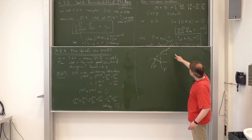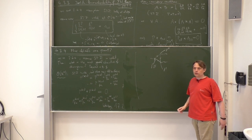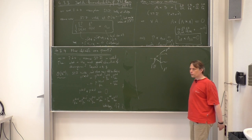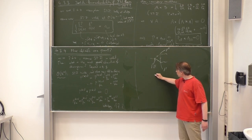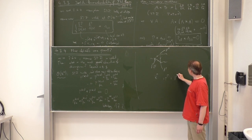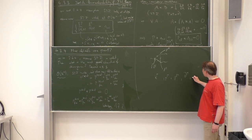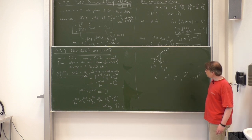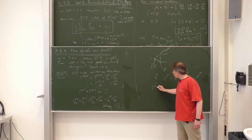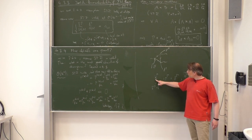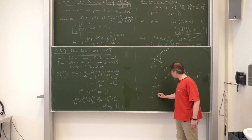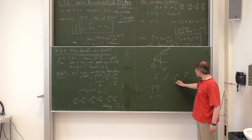All quantities — momenta, gamma matrices, derivatives, polarization vectors — you can think of first in d dimensions. For each you can do a split: d-dimensional = four-dimensional + (d−4)-dimensional parts. So γ^μ = γ̄^μ + γ̂^μ and so on. For some quantities like external polarization vectors, ε^μ = ε̄^μ only, because that is a polarization vector of a physical photon with no hat-component. The same is true for momenta of external particles. But the loop momentum is d-dimensional, and gamma matrices at vertices in the loop are also d-dimensional.